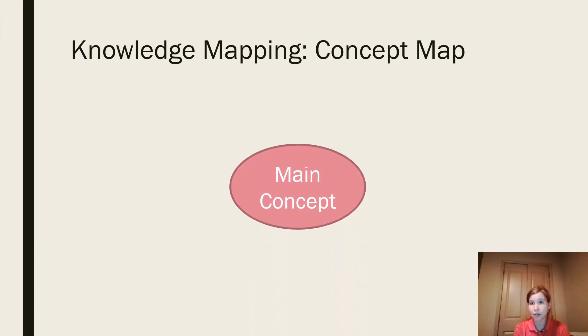So knowledge mapping is basically when you take something called a concept map and you have a main concept and you try to make as many topics support it as possible.